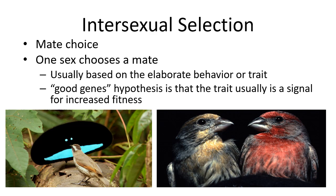The good genes hypothesis states that the trait is usually a signal associated with a fitness indicator. The plumage on house finches may reflect a diet high in carotenoids, meaning they're better able to acquire high-quality food, making them more red. Those genes for acquiring resources would then be passed on to the female's offspring.